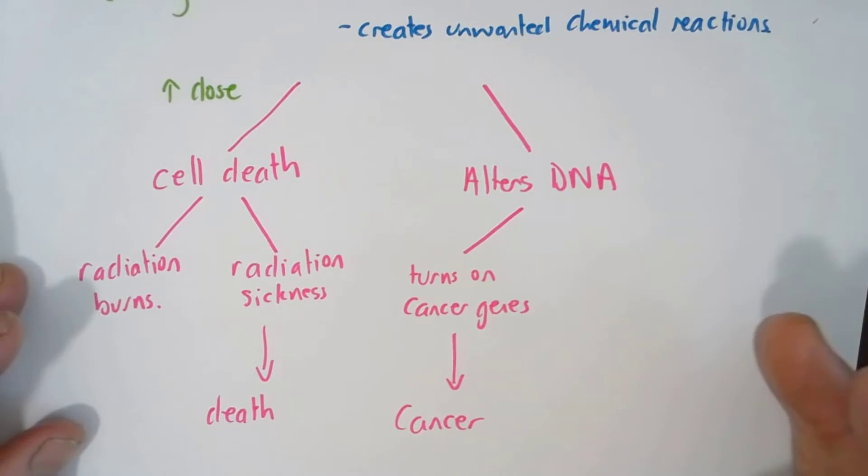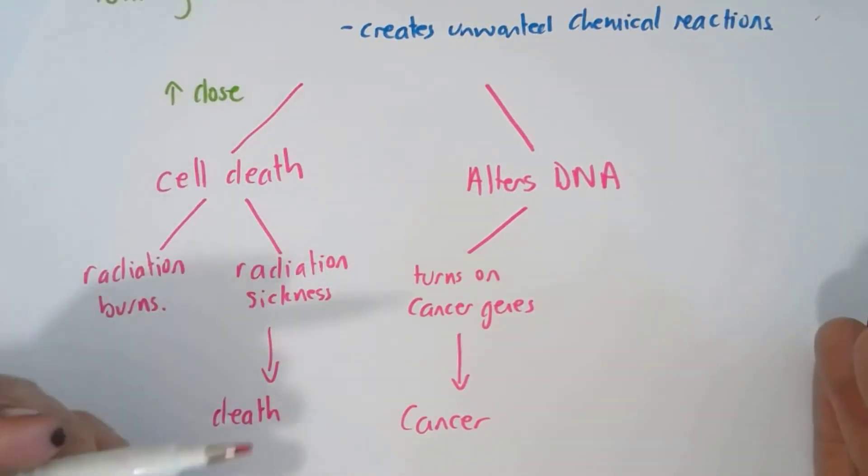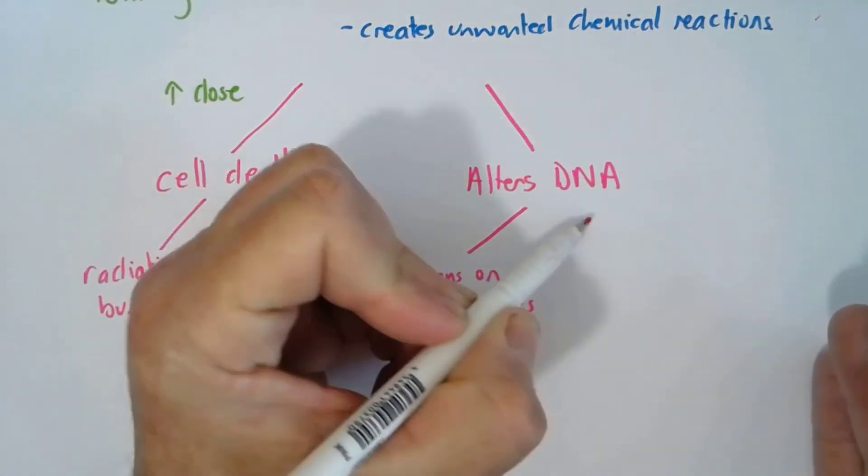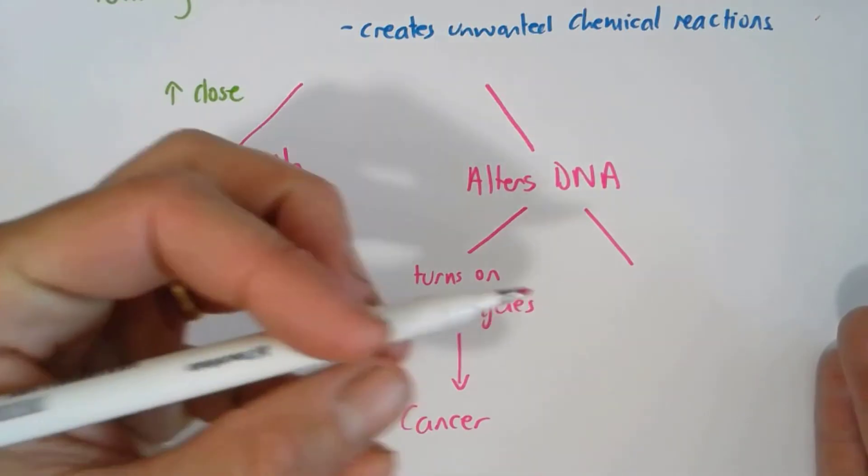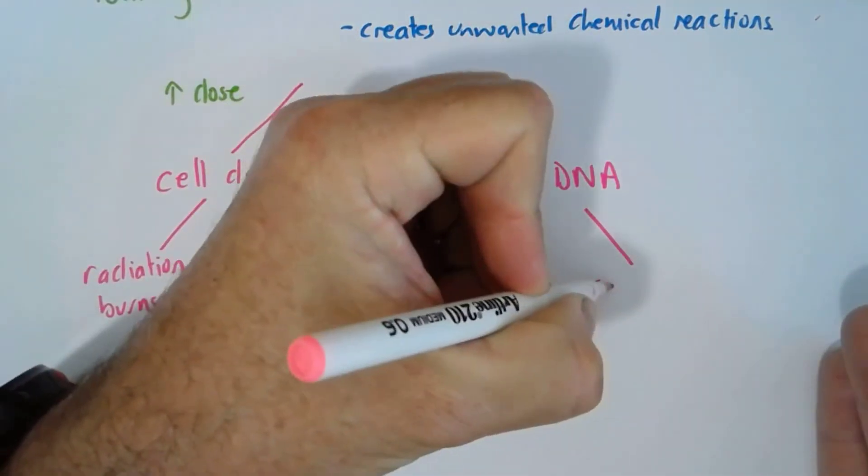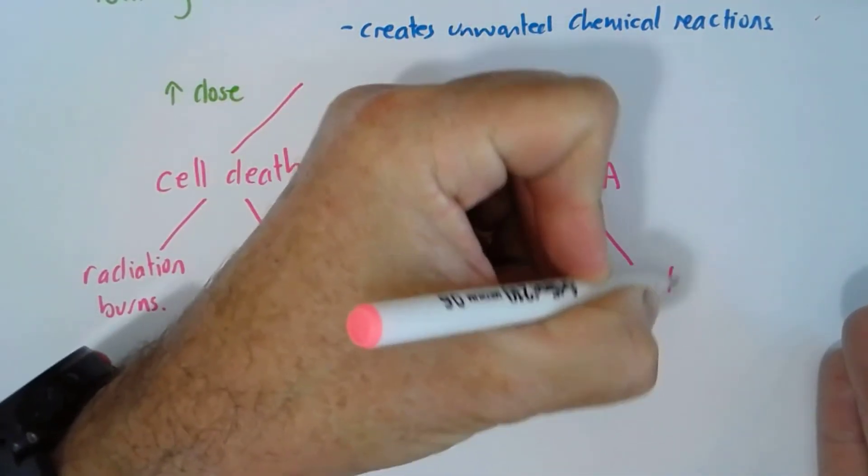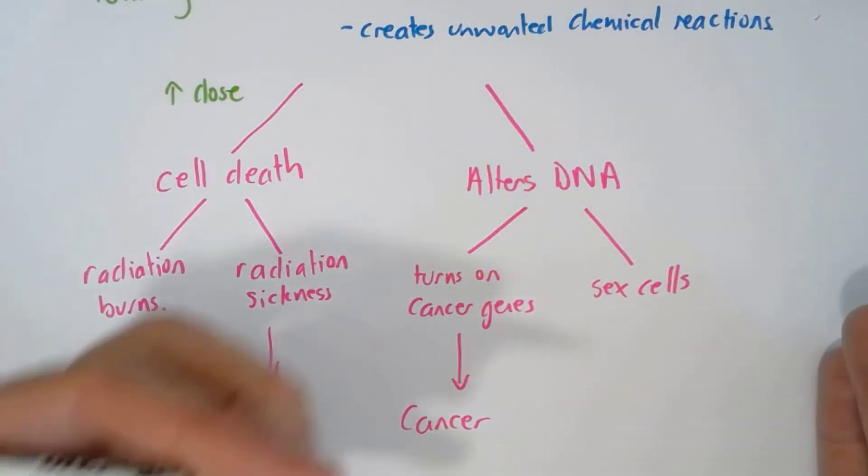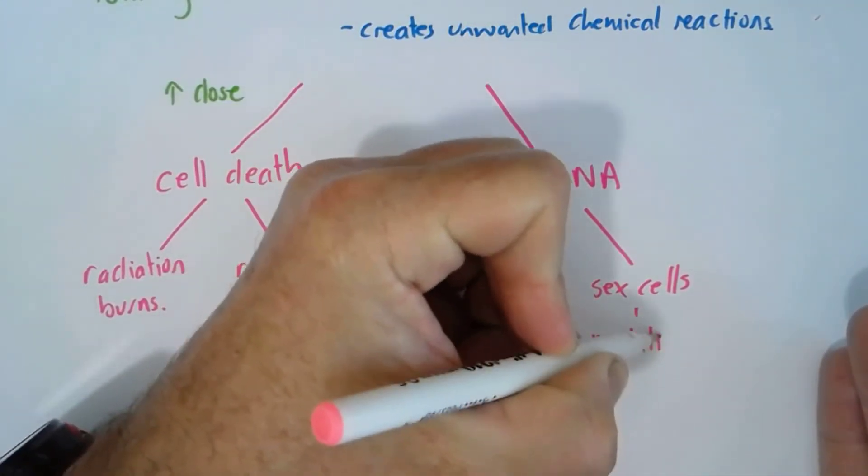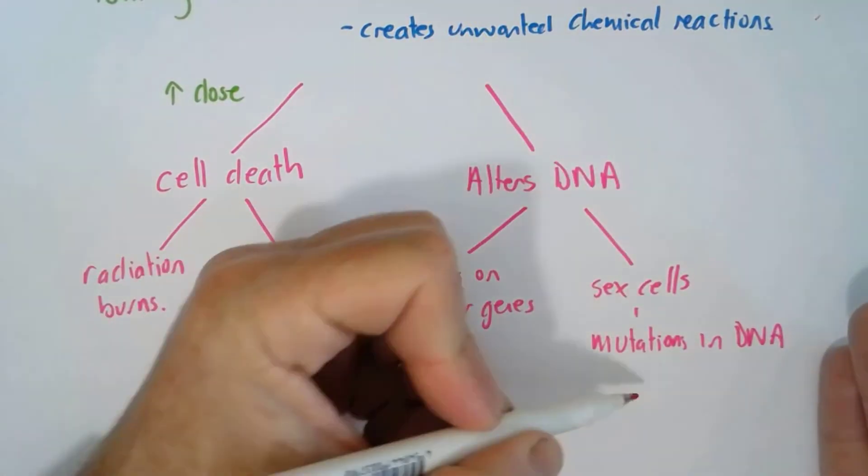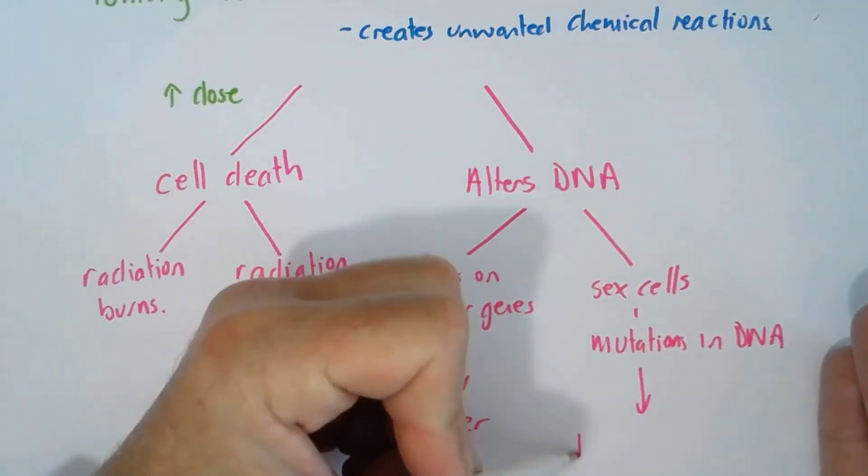Now if the cells that get irradiated are the sex cells - so sperm and eggs or the gonads that actually produce the sperms and the eggs - if mutations occur to the DNA of those, then the offspring can have birth defects.